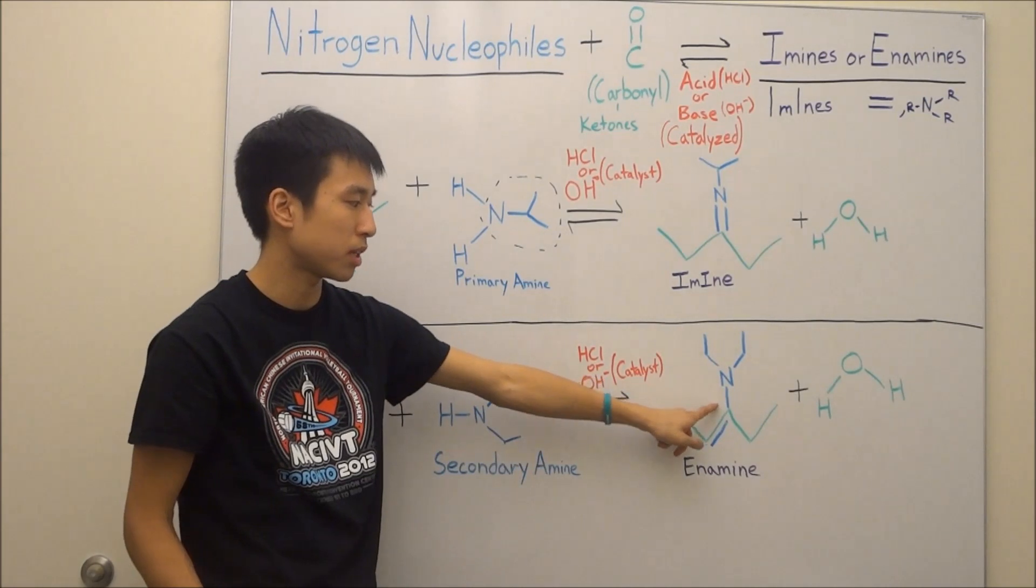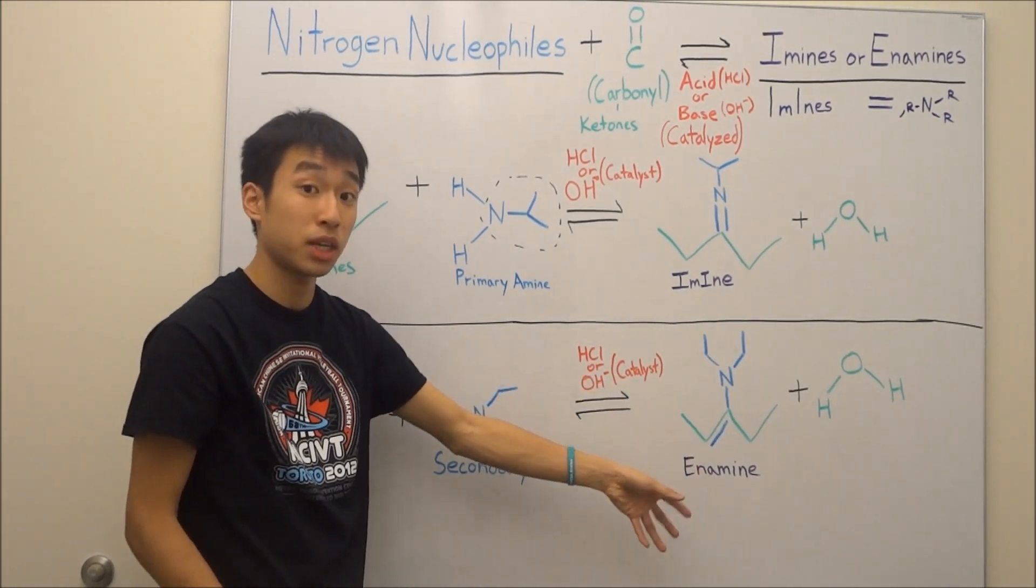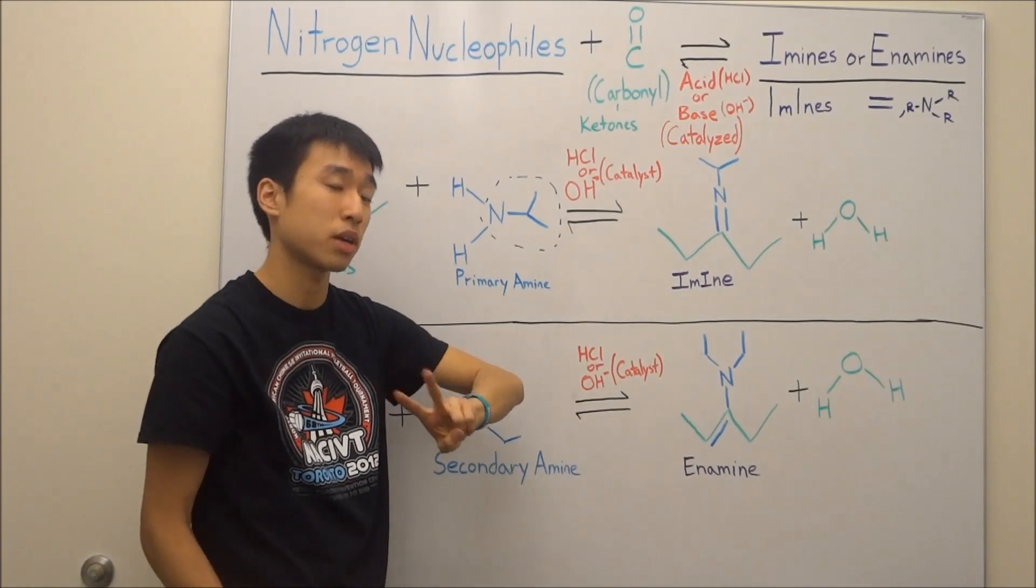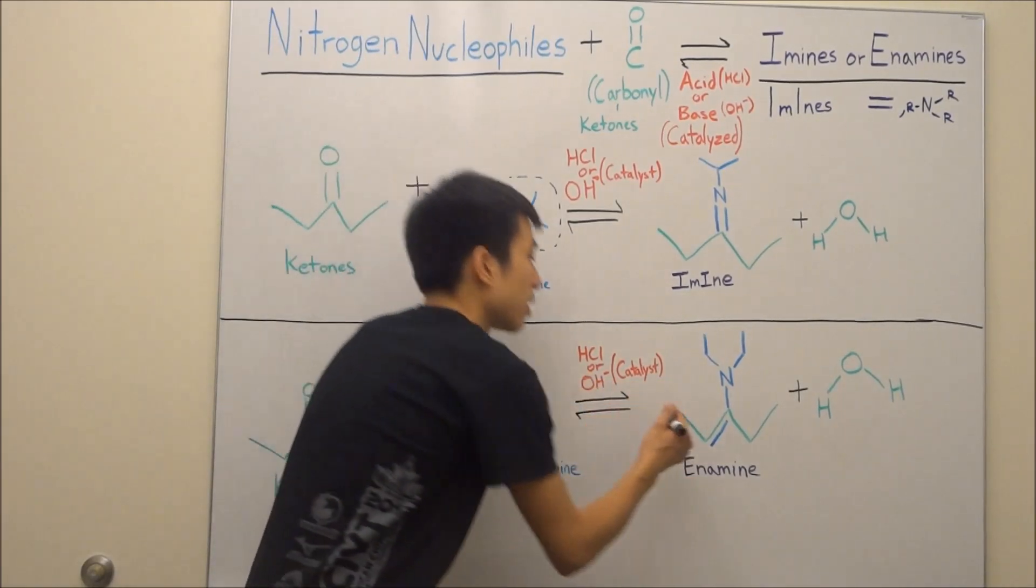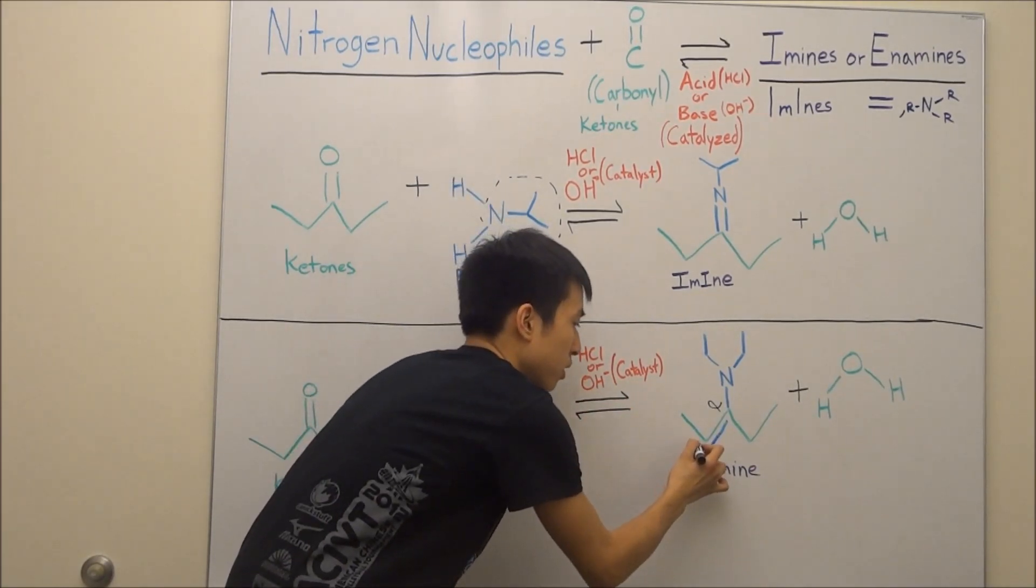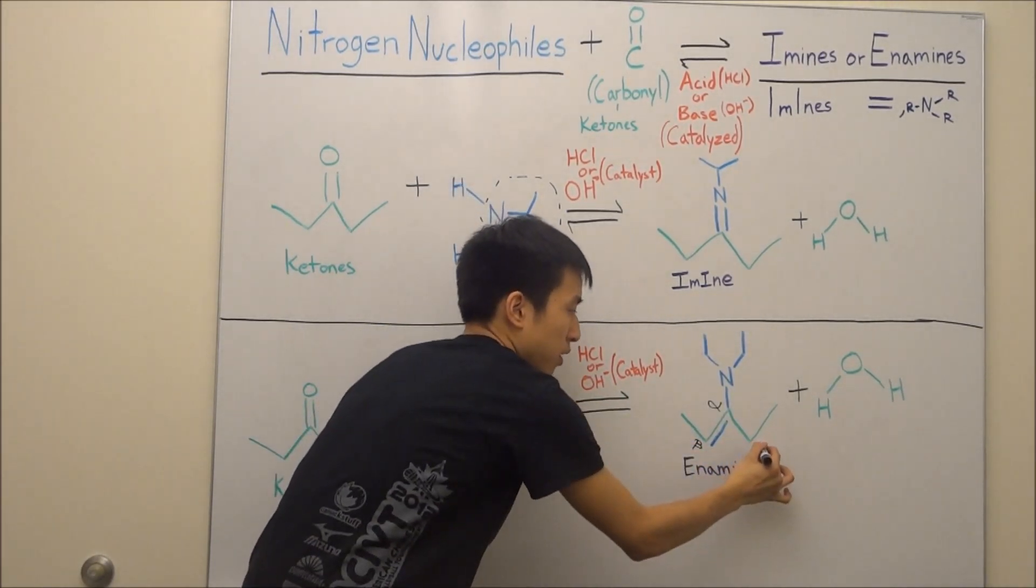And instead of a double bond being here, you kind of do an elimination reaction on a beta carbon, which is a carbon two carbons away from the nitrogen. So, this is the alpha carbon, which you guys might have heard of before, and then this is the beta carbon. And there's actually two beta carbons because there's one over here as well.